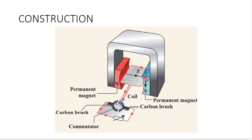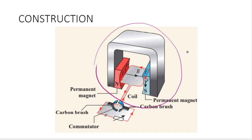Next, let us look at the construction. In the construction, there is a permanent magnet called North and South Pole. This is a simple armature coil A, B, C, D. This armature coil is connected to an additional device — these are split rings. There is also a carbon brush and a battery as the power supply.